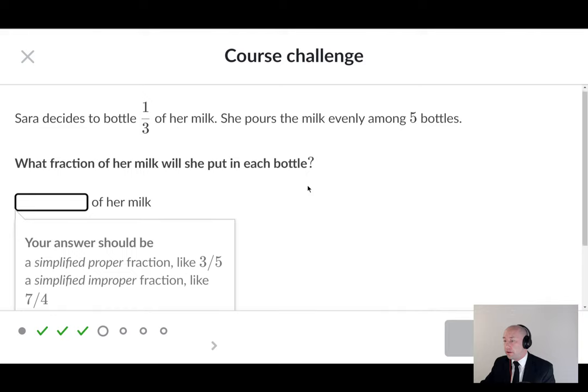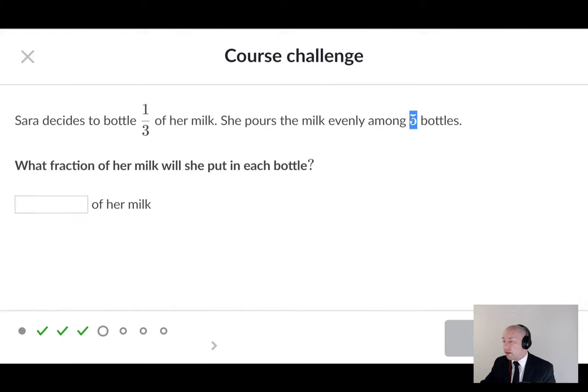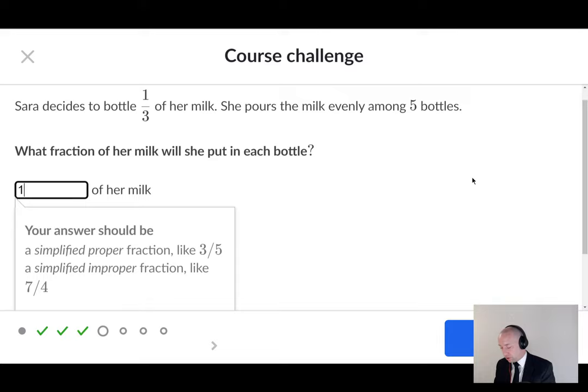Sarah divides one third of her milk. She pours the milk evenly among five bottles. What fraction of her milk will she put in each bottle? We are dividing a third of a glass or a carton of milk by five. When we divide a fraction, we have to do our keep switch flip and turn division into multiplication. Dividing by five is the same as multiplying by one over five. And that's because five as a fraction would be five over one. And one over three times one over five is one over 15.